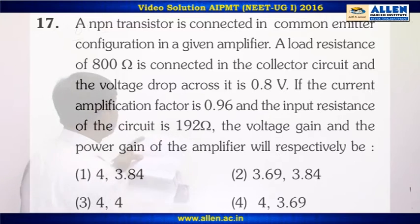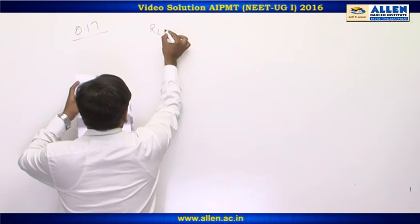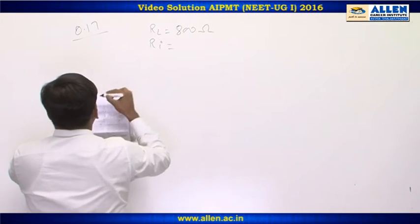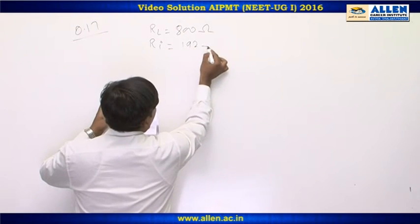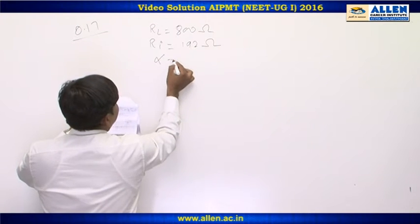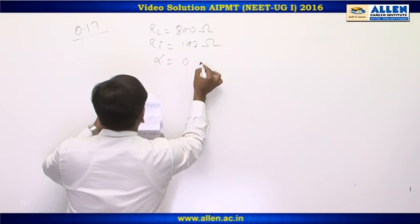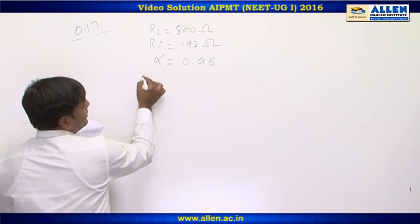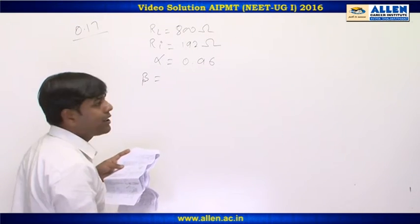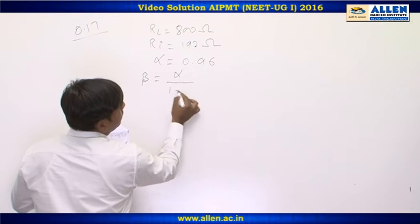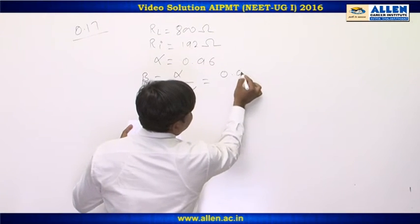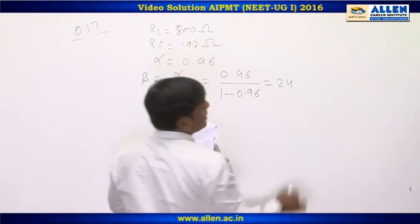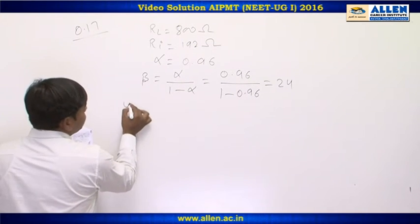In Question 17, we are given load resistance RL = 800 Ohm, input resistance = 192 Ohm, and current gain alpha = 0.96. Since alpha is given, we can calculate beta. We know beta = alpha / (1 - alpha) = 0.96 / (1 - 0.96), which gives beta = 24.